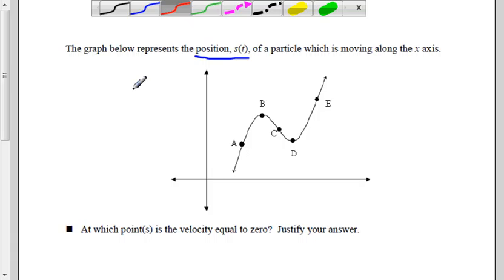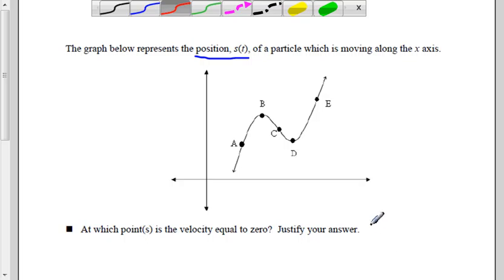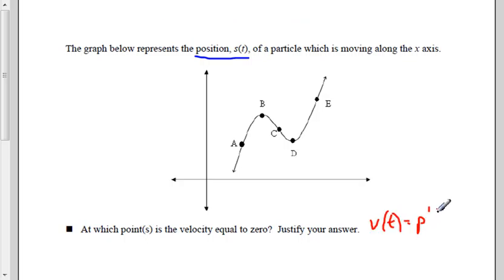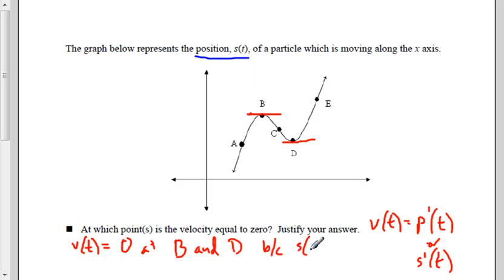We can apply the same relationship between acceleration and velocity — it's the same as the relationship between the second derivative and the first derivative. If acceleration is zero or undefined, the velocity has a potential change. If the second derivative or acceleration is positive, then the velocity is increasing; if negative, the velocity is decreasing. If acceleration changes from positive to negative, velocity changes from increasing to decreasing, and if it changes from negative to positive, velocity changes from decreasing to increasing.